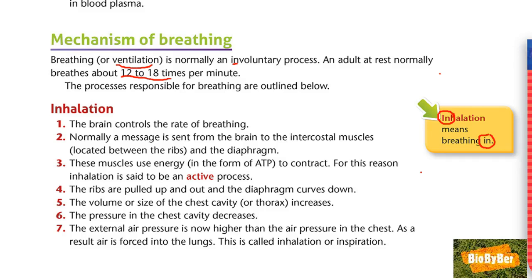These muscles use energy in the form of ATP to contract. They contract and pull your ribs up, so inhalation is said to be an active process because it involves effort. The ribs are pulled up and out so your chest enlarges, and the diaphragm curves down. The volume of the chest cavity — the thorax — increases, the pressure inside decreases, and the external air pressure is now higher, so air is forced into the lungs. This is called inhalation or inspiration.